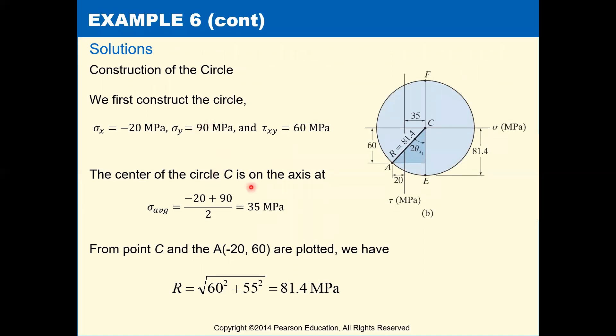In order to find the center of our circle, we need to take the average of sigma x and sigma y. That's going to give us 35 megapascals. So when we plot our Mohr circle, again sigma on our x-axis, tau positive going down on our y-axis. So our center is going to be at positive 35 on the sigma axis. And then our reference point is going to be sigma x, which is at negative 20 comma tau xy, which is a positive 60.